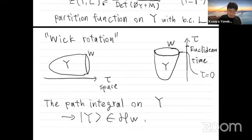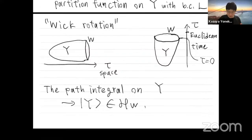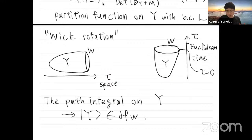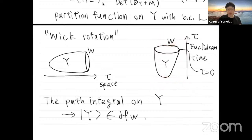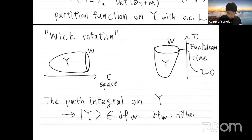This is similar to Hartle-Hawking's creation of the universe from nothing, but I'm not discussing quantum gravity. Here the metric is just a background field. We can still consider this as a transition amplitude from nothing — empty space — to W. So in this interpretation, this path integral gives a state vector on W, where H_W is a Hilbert space on W.